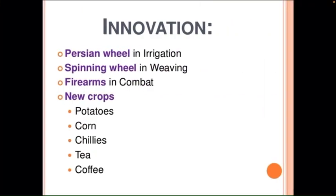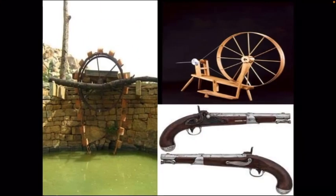There were different innovations during that thousand years. The first was the Persian wheel, used in irrigation. Then the spinning wheel, used in weaving cloth. Firearms were used in combat. There were also different new crops that were now grown — potatoes, corn, chilies, tea, coffee, etc. You can see some of them in these images: the Persian wheel, the firearms, the spinning wheel, and so on.